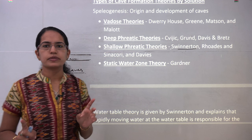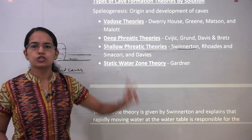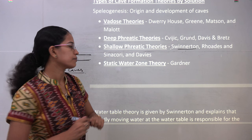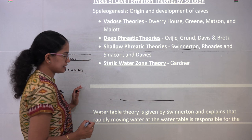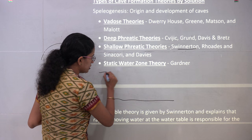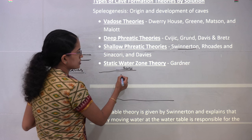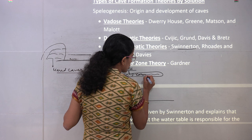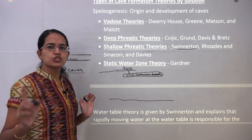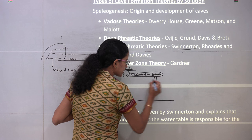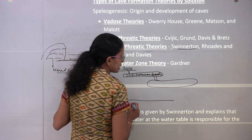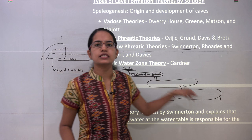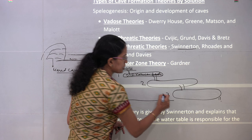The most important and last theory we discuss today is the static water zone theory, propounded by Gardner. This theory is very similar to Swinnerton's theory but is a bit different. You have the base level existing here, and a river flowing here. This river's water percolates down, then flows through carrier beds — rocks that allow the water to move. From this it percolates further, moves through another set of carrier beds, then percolates down again, moves through another set of carrier beds, and so on. By this process you have cave formations at different levels: first cave formation at this level, second at this level, third at this level, and so on.